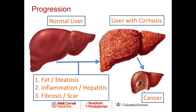A normal liver is usually soft and spongy. Over time, if it's exposed to fat — which we also call steatosis — or inflammation, which we also call hepatitis, fibrosis can eventually form, which is scarring of the liver. And with time, the liver can develop cirrhosis from chronic inflammation and scar. Patients with cirrhosis are then at risk for liver cancer.